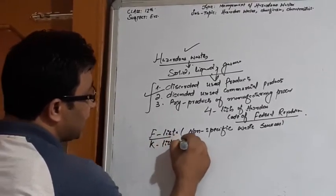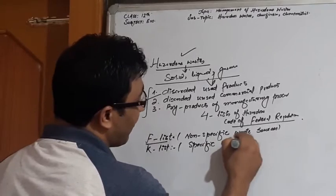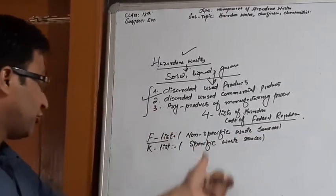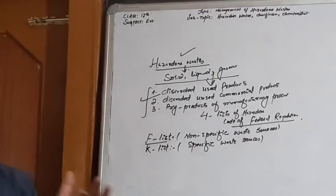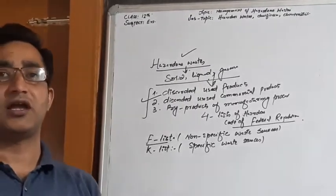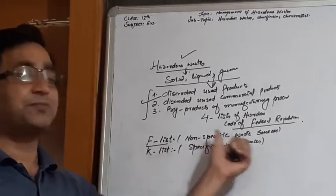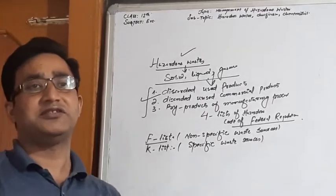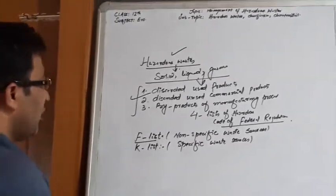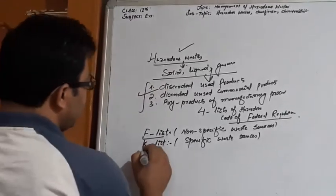K-list hazardous waste is from specific waste sources. What are these specific waste sources? Specific sources like this site industry or plant industry.